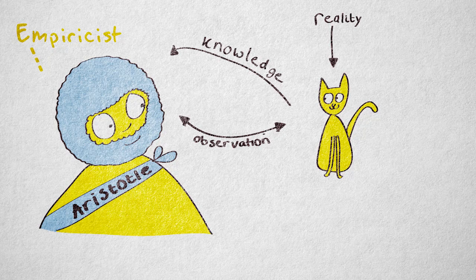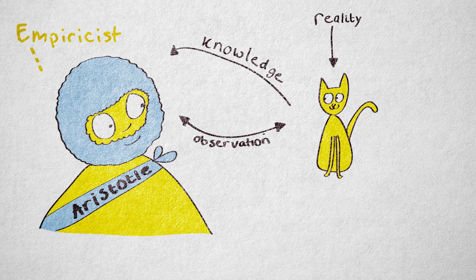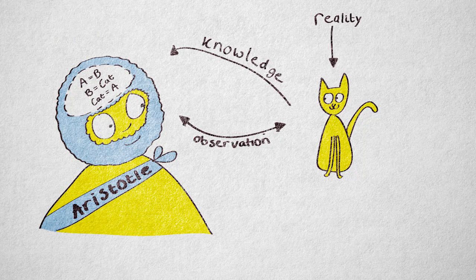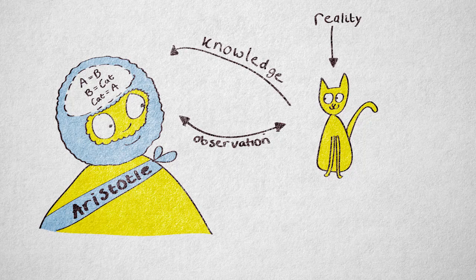But that doesn't mean Aristotle was interested in observations only. He still saw reasoning as the best way to understand and explain nature. He, in fact, developed formal logic, more specifically the syllogism.